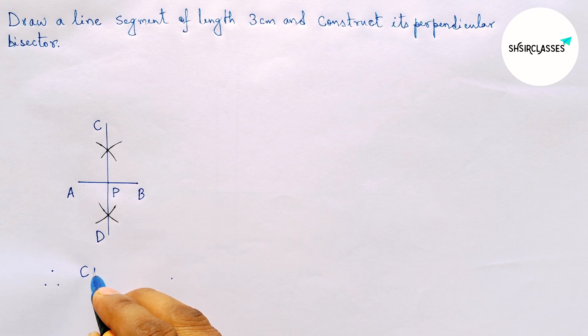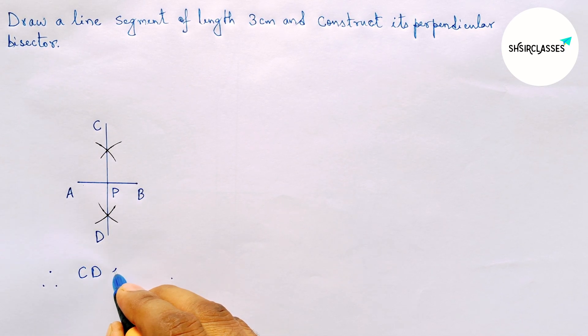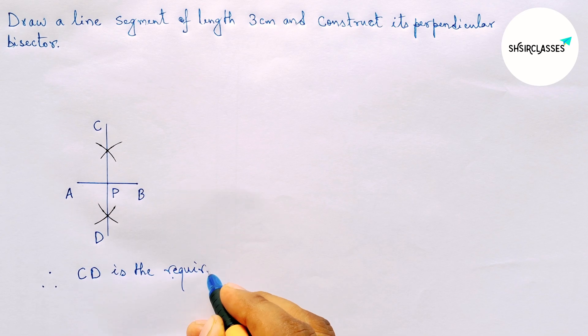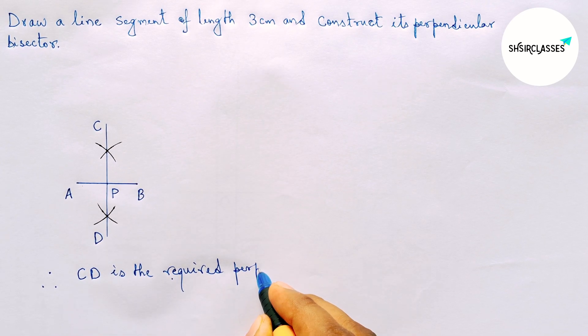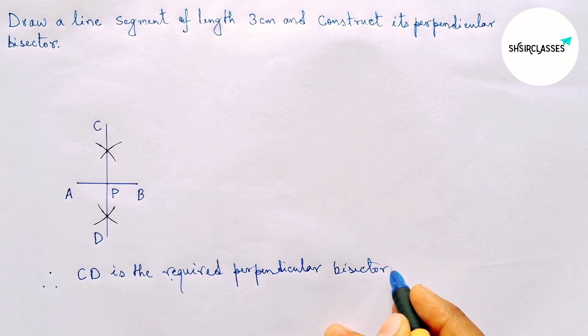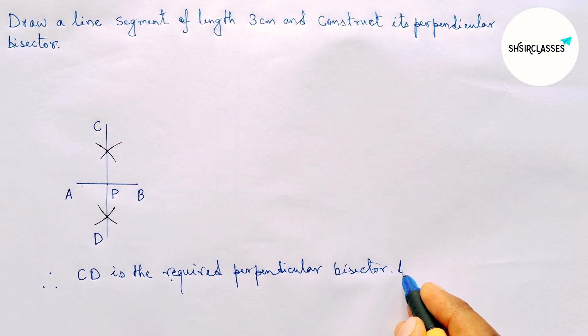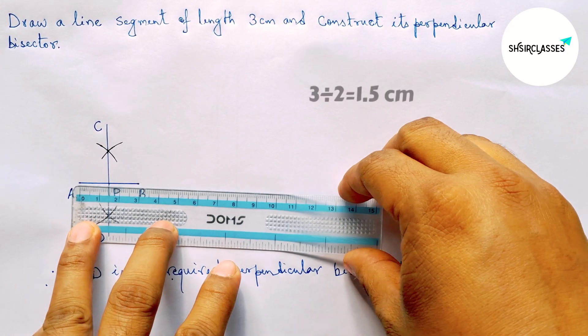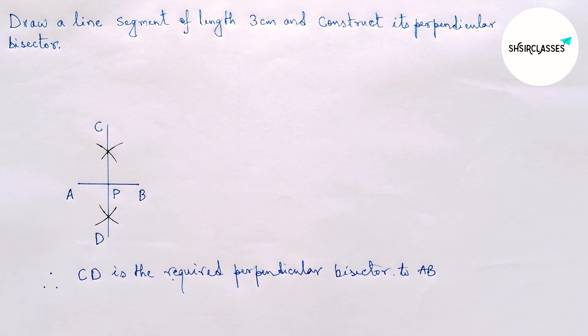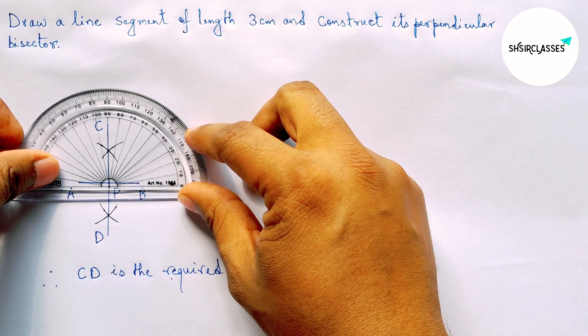And this is a 90 degree angle, perfect. Okay, so here CD is the required perpendicular bisector to the line AB and AP equal PB equal 3 centimeter. So by this way you can construct a perpendicular bisector.